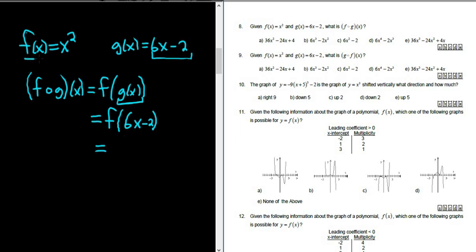So f of x is up here, it's x squared. So this whole thing here becomes your x, the 6x minus 2. So you're basically taking this and plugging it in here for the x. So it'll be parentheses 6x minus 2 quantity squared.